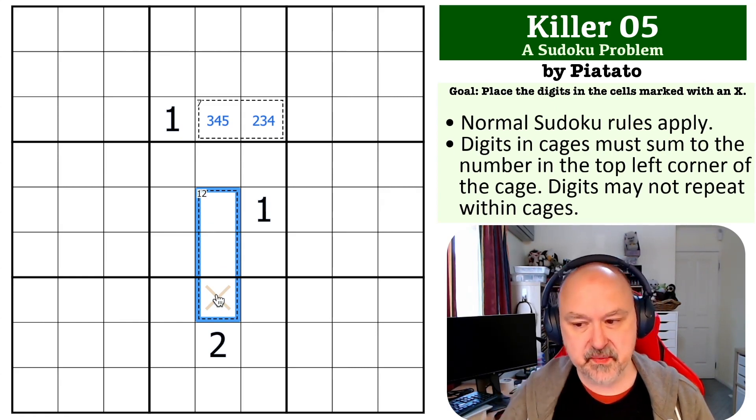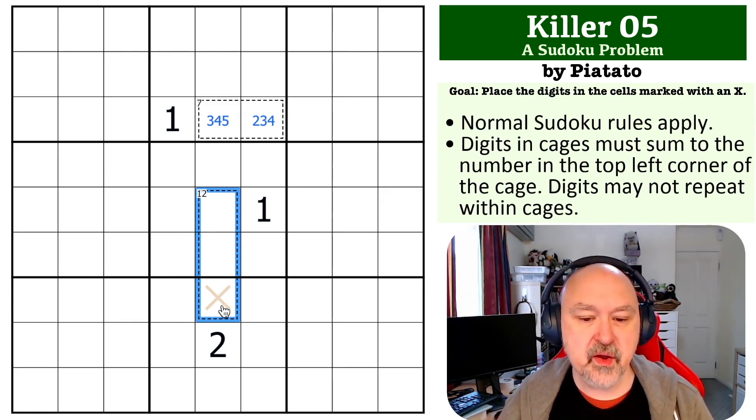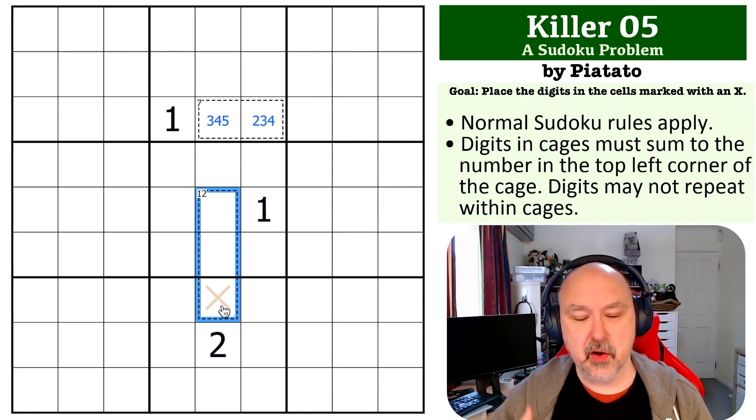So the options that are left in this cage are quite limited. But what we now need to think about is without a 2, we can't use the only other option that doesn't use a 1, which is 3, 4, 5. Because if we don't, 3, 4, 5 itself sums to 12. 4 and 5 is 9, add 3, you get to 12.